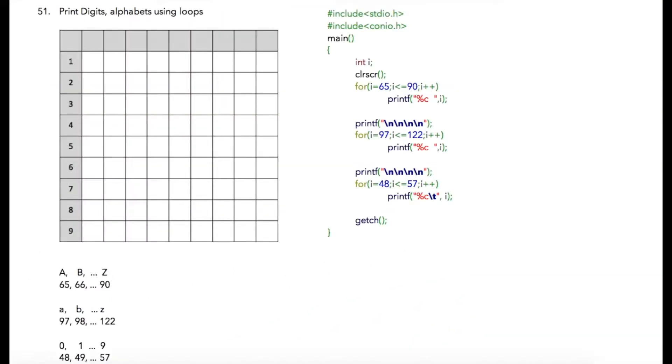In this program we are going to print all the digits and alphabets in uppercase and lowercase using for loops. Here is something about ASCII values: ASCII value of capital A starts from 65, then ASCII value for capital B is 66 and so on, and finally ASCII value of capital Z is 90.